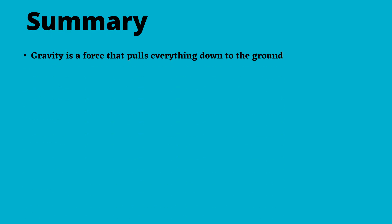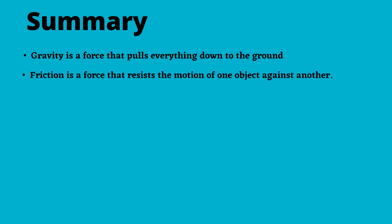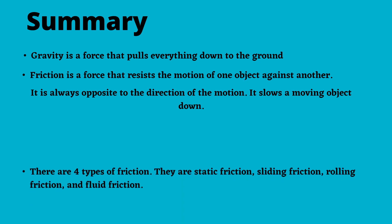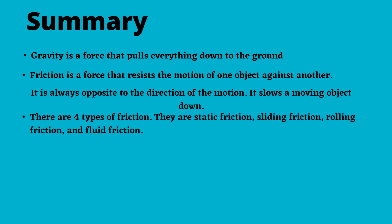Let's summarize our lesson. Gravity is a force that pulls everything down to the ground. Friction is a force that resists the motion of one object against another. It is always opposite to the direction of the motion and it slows a moving object down. There are four types of friction: static friction, sliding friction, rolling friction, and fluid friction.